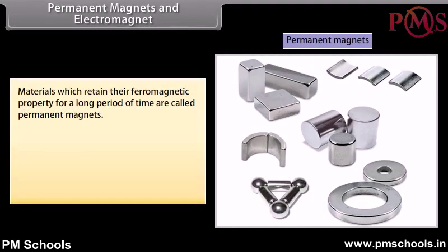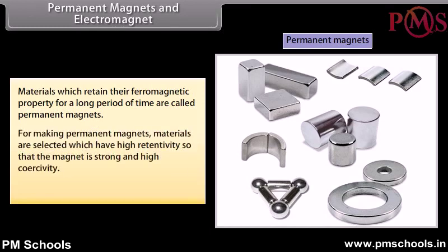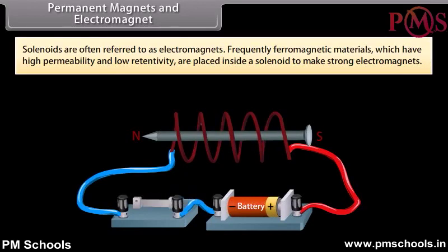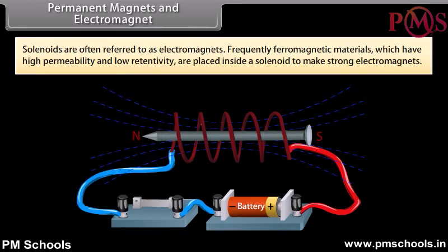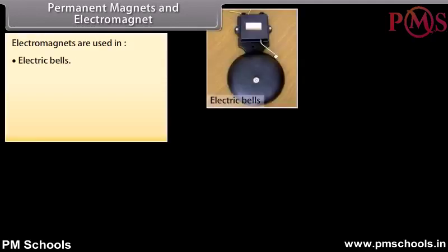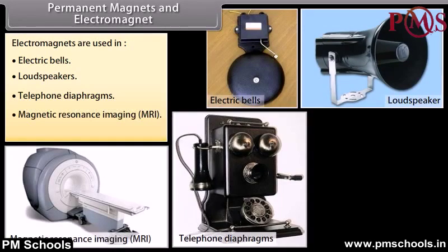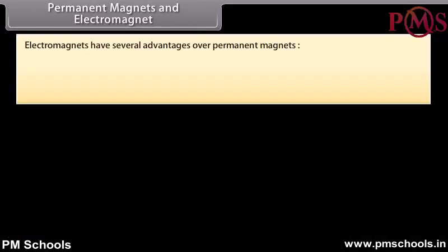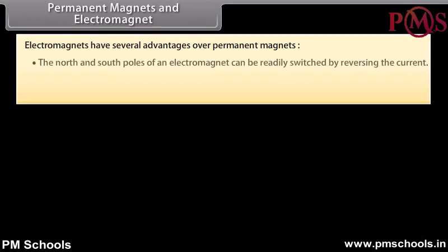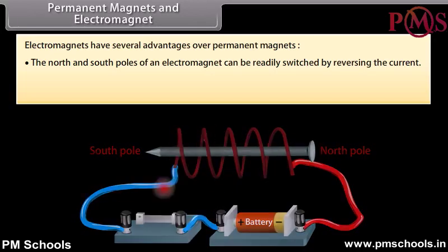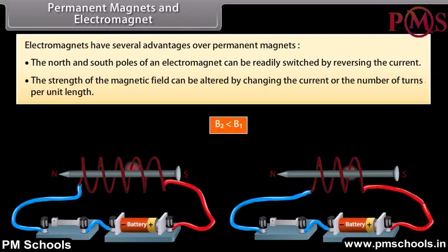Permanent magnets and electromagnets: Materials which retain their ferromagnetic property for a long time are called permanent magnets. For permanent magnets, materials with high retentivity and high coercivity are selected — for example, steel, Alnico, and cobalt steel. Solenoids are often referred to as electromagnets; ferromagnetic materials with high permeability and low retentivity are placed inside a solenoid to make strong electromagnets. Electromagnets are used in electric bells, loudspeakers, telephone diaphragms, MRI, and cranes to lift heavy materials. Advantages of electromagnets: poles can be switched by reversing the current, and field strength can be altered by changing the current or number of turns per unit length.